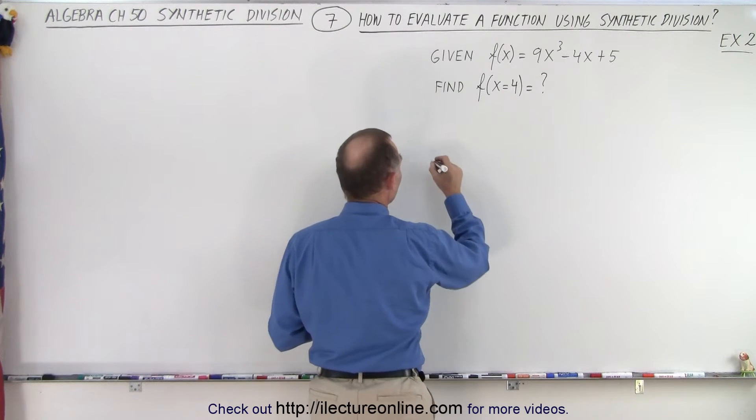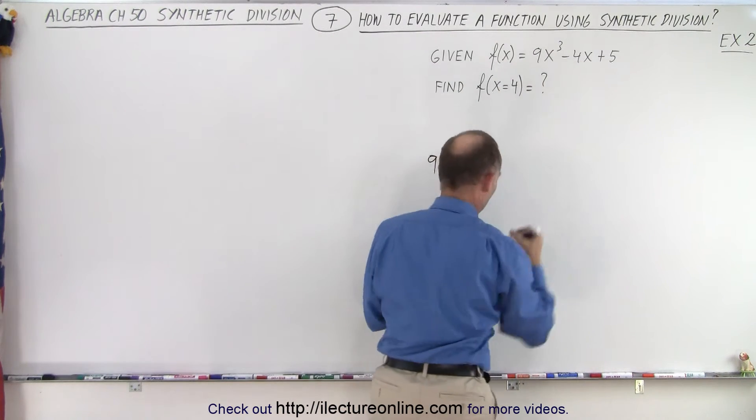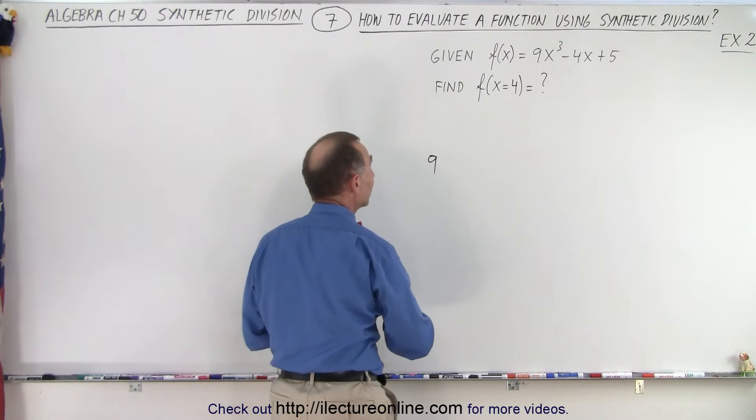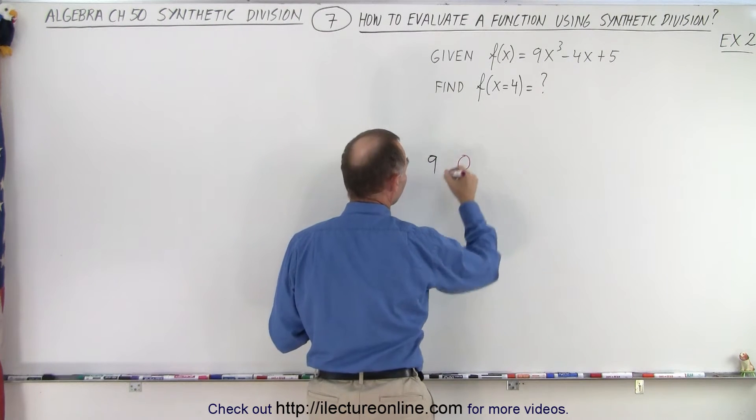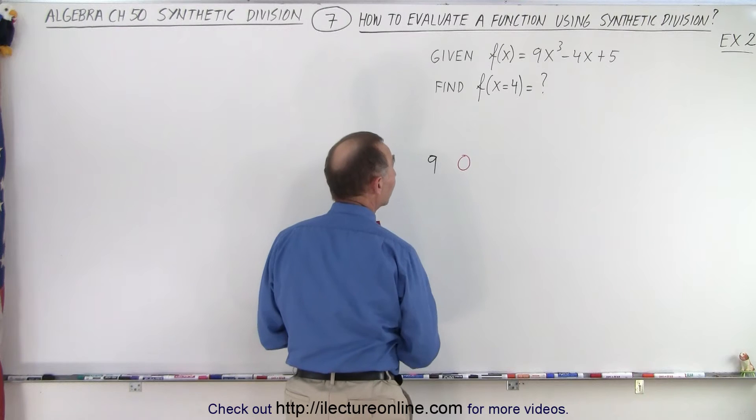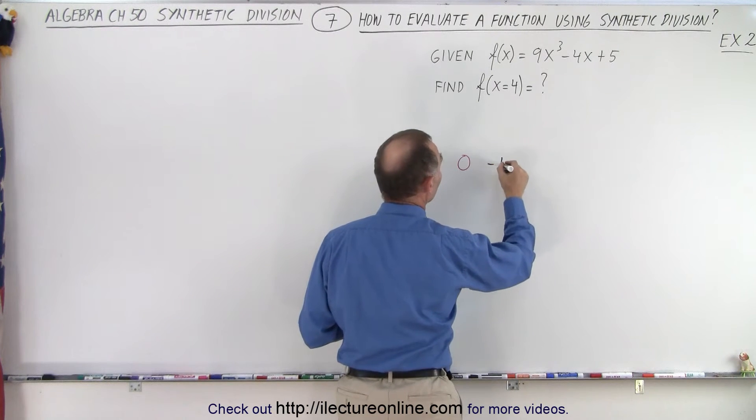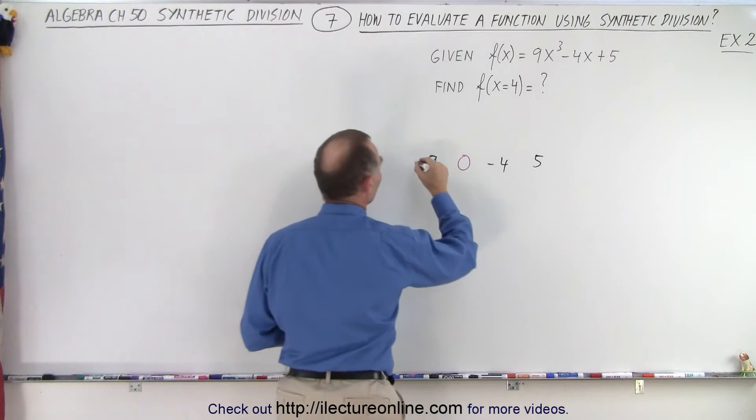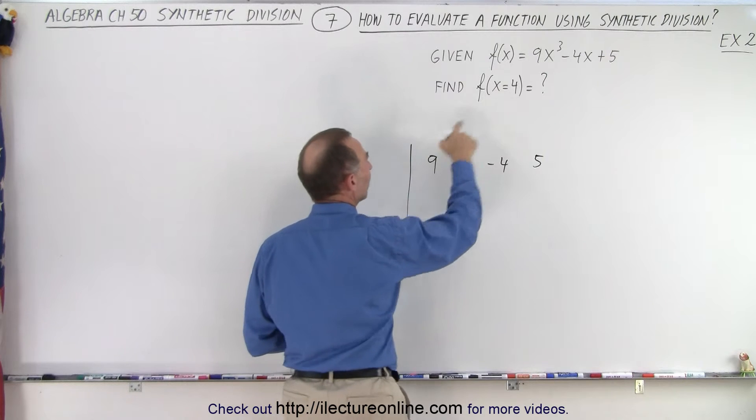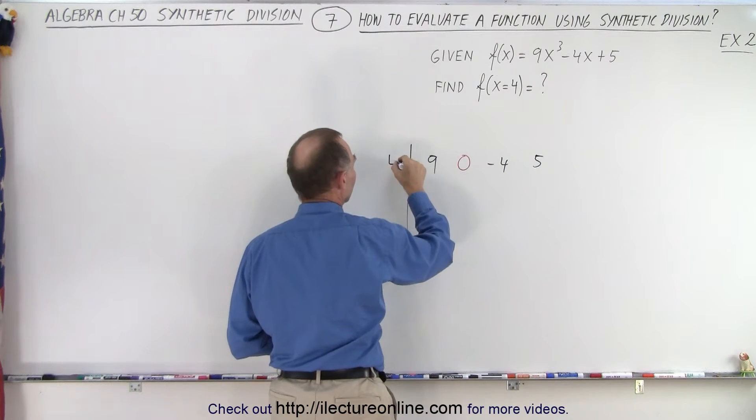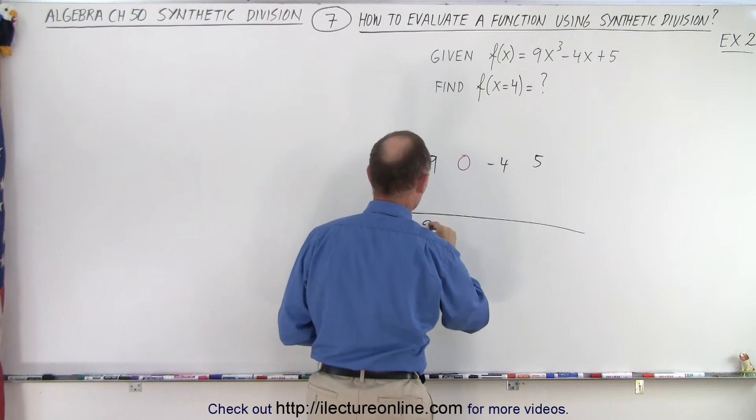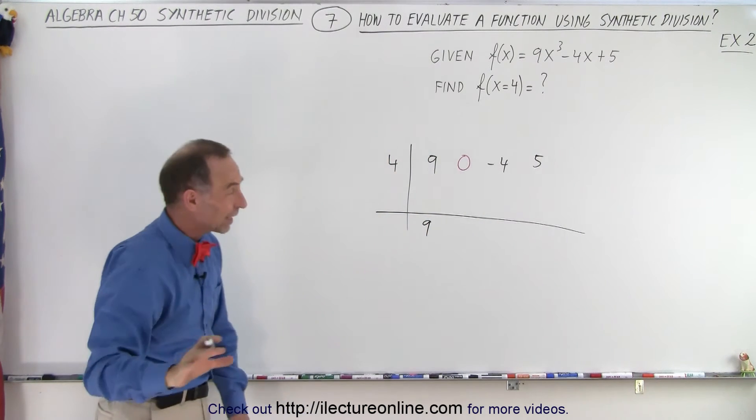So let's go ahead and plug in the coefficients. We have 9, but notice we don't have an x squared term, so for the x squared term we need to put in a placeholder zero. And we have an x to the first power, we have a minus four there and a plus five. Over the line, over here on this side, we want to evaluate the function at x equals four. Put a line here and you drop down the first number 9.